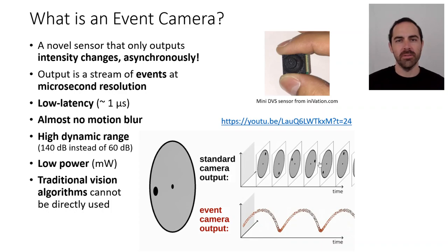So what is an event camera? An event camera is a novel sensor that only outputs intensity changes asynchronously. So the output of this sensor is a stream of events at microsecond resolution rather than what we are more familiar with in the case of a frame-based camera, which is a sequence of images.